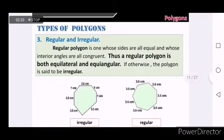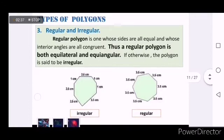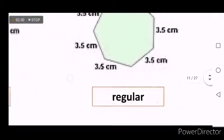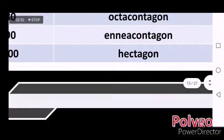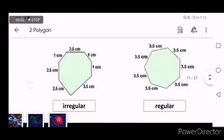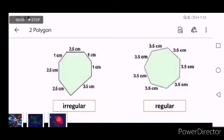We can also classify the types of polygons as regular and irregular. A regular polygon is one whose sides are all equal and whose interior angles are all congruent. The figure on the right side is a regular polygon because all the sides are equal, while the figure on the left side is an irregular polygon.